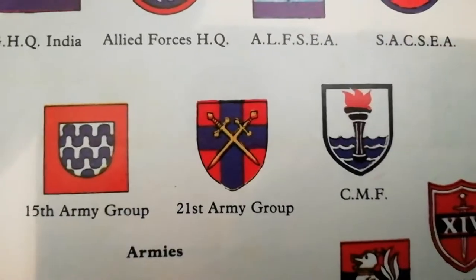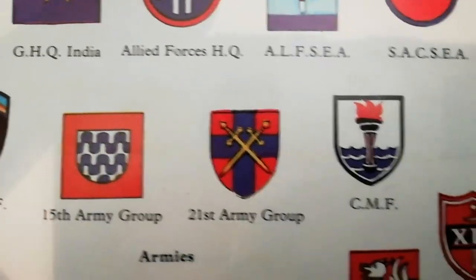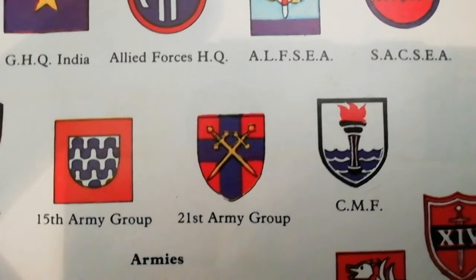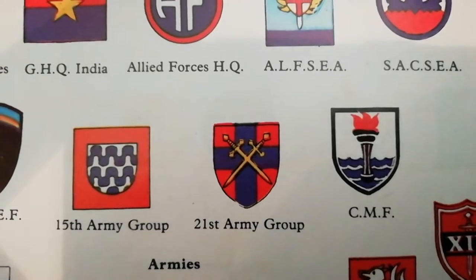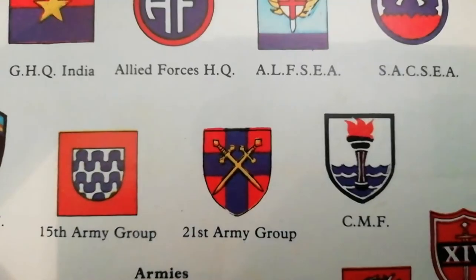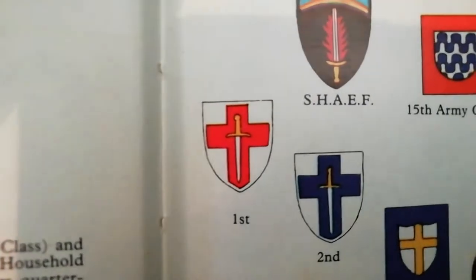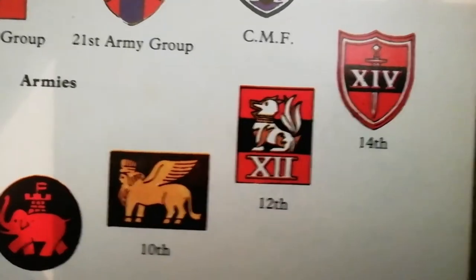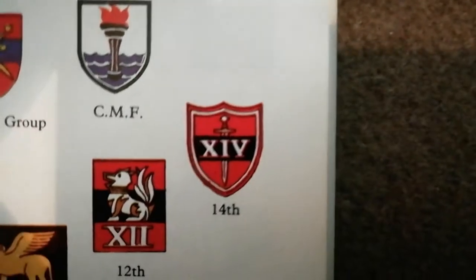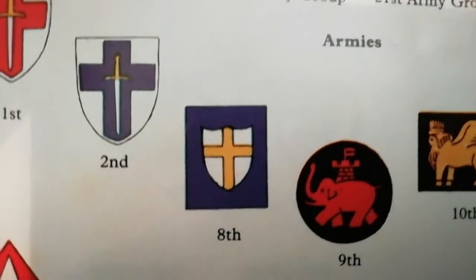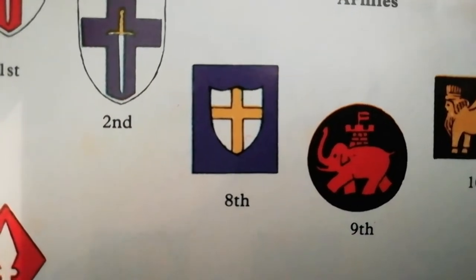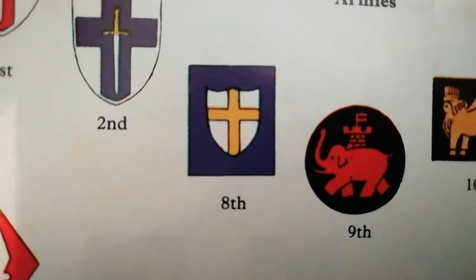So you've got your 15th Army, 21st Army Group — we'll follow the path of the most famous British ones. You get the 21st Army Group, then going down to the armies: First Army, Second Army, Eighth Army, Ninth Army, Tenth Army, Twelfth, and the famous 14th Army that fought in the Far East in Burma. From the 21st Army Group we get the famous Second and Eighth Armies.